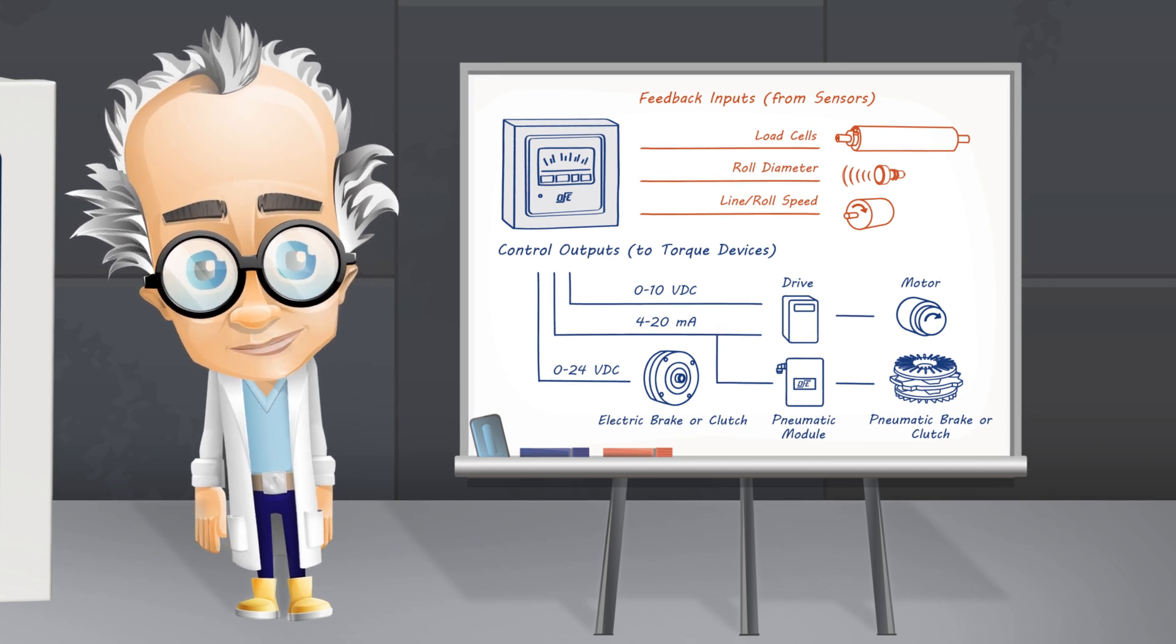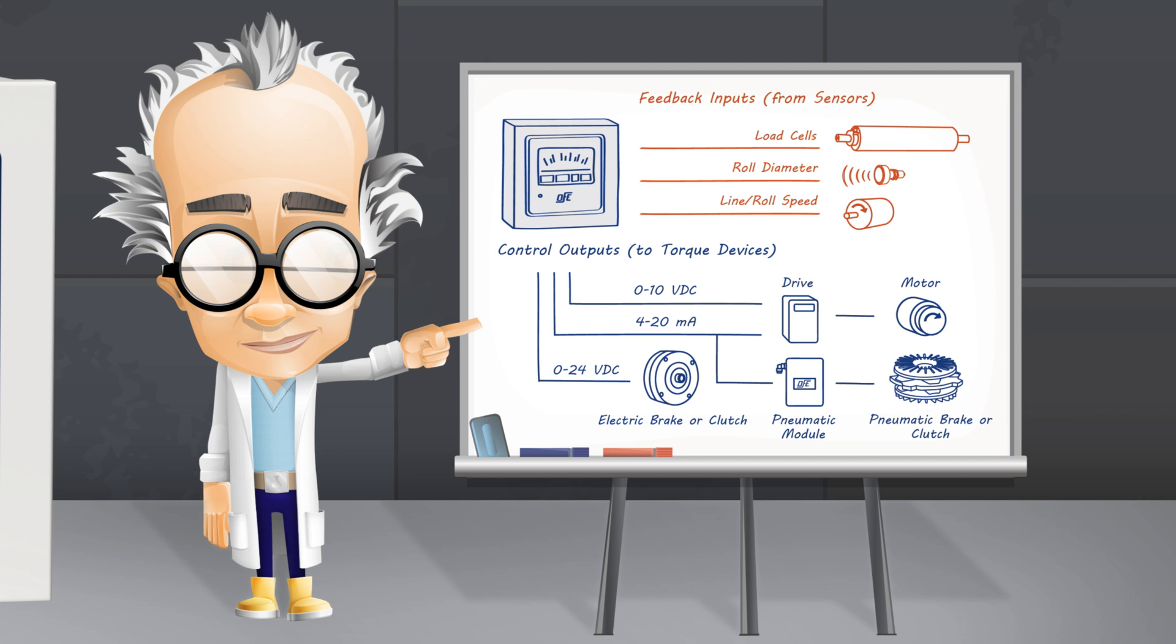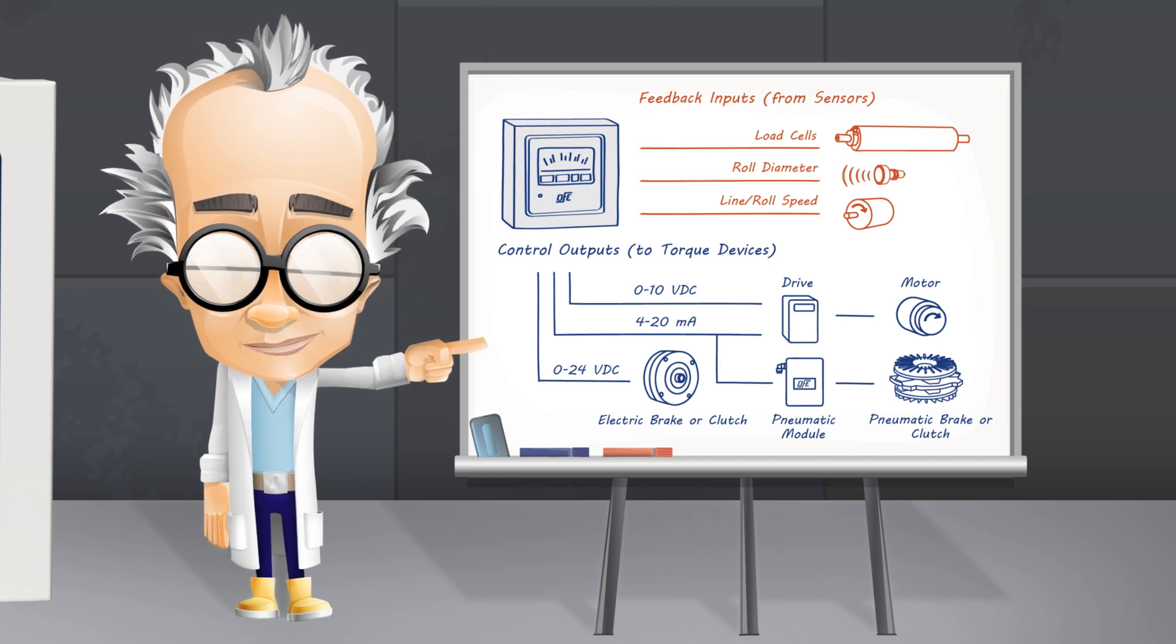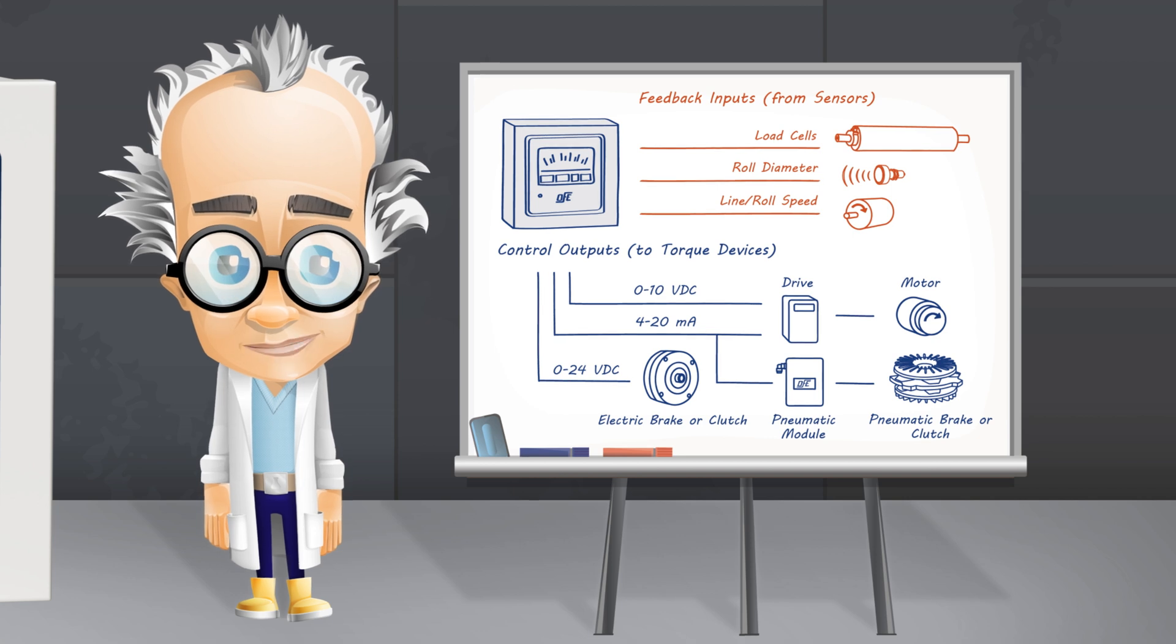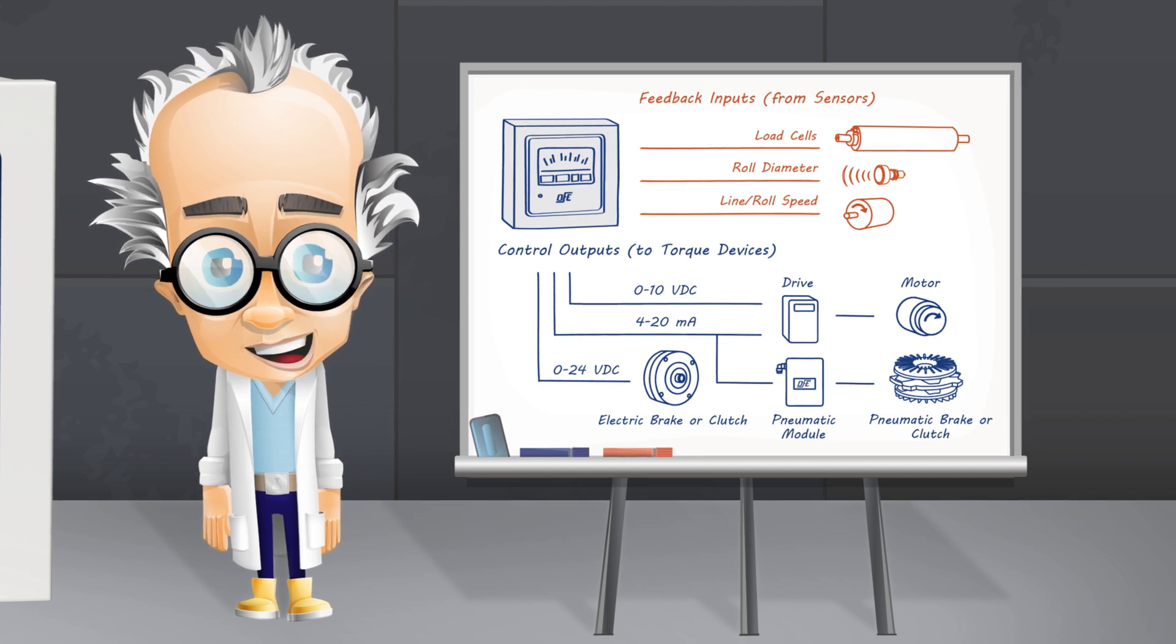A variety of output choices including 0 to 10 volts DC, 4 to 20 milliamps, or 0 to 24 volts DC are available for interfacing with torque devices such as brakes, drives, and clutches.